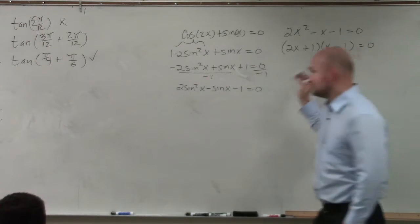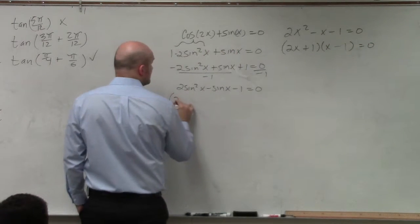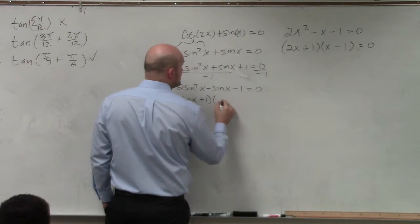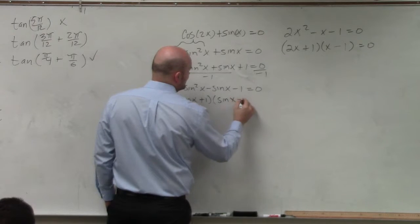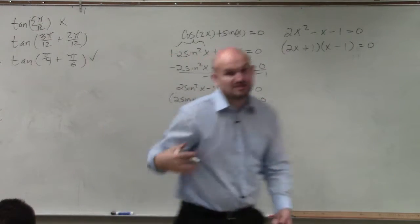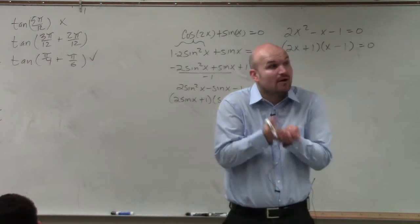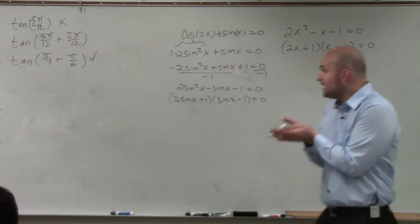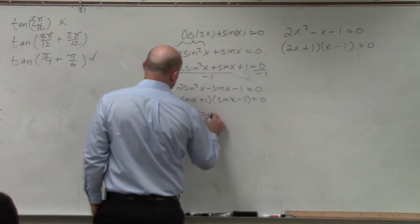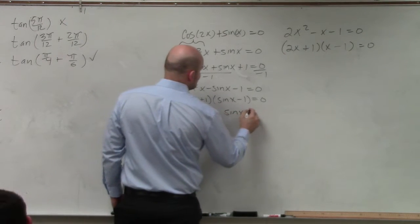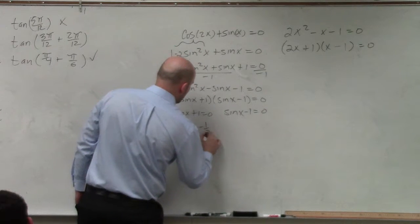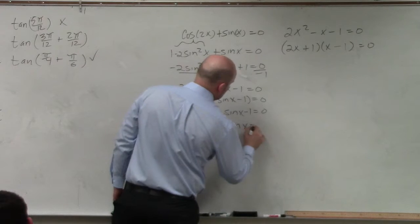Now here, I can now just replace this for 2 sin of x plus 1 times sin of x minus 1 equals 0. Now all I simply need to do is solve by applying my zero product property to sin of x plus 1 equals 0, sin of x minus 1 equals 0. Sin of x equals negative 1 half. Sin of x equals 1.